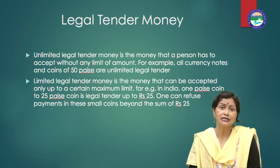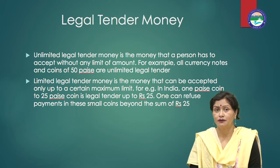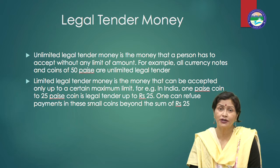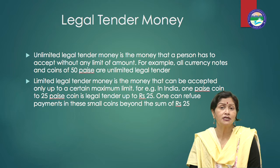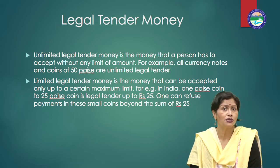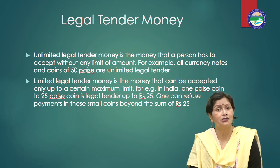Now let us talk about limited legal tender money. Limited legal tender money is the money that can be accepted only up to a certain maximum limit. For example, in India, one paise coin to 25 paise coin is legal tender up to Rs. 25. One can refuse payments in these small coins beyond the sum of Rs. 25. Now, unlimited legal tender money is the money that a person has to accept without any limit of amount. For example, all currency notes and coins of 50 paise are unlimited legal tender money.